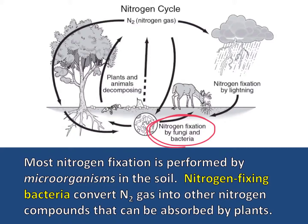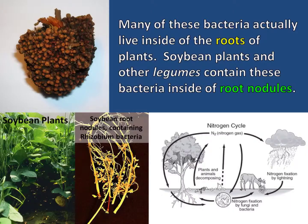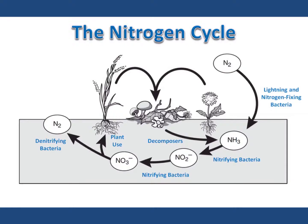Most nitrogen fixation is performed by microorganisms in the soil. Nitrogen-fixing bacteria convert nitrogen gas into other nitrogen compounds that can be absorbed by plants. Many of these bacteria actually live inside the roots of plants — soybean plants and other legumes contain these bacteria inside of root nodules. Once nitrogen has been fixed and transformed into ammonia, nitrifying bacteria convert that ammonia into nitrites and nitrates, which are what can be used by plants.